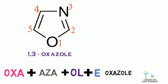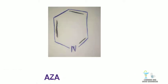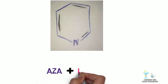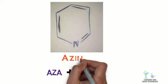Last, six-membered ring system. OXA for oxygen, IN for six-membered ring, and E for unsaturation. OXA plus IN plus E equals OXAZINE.